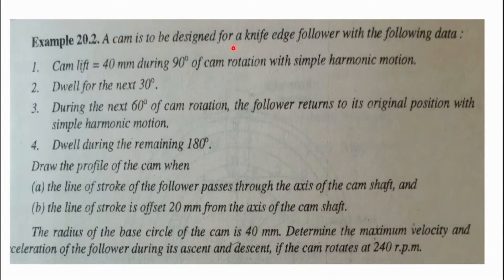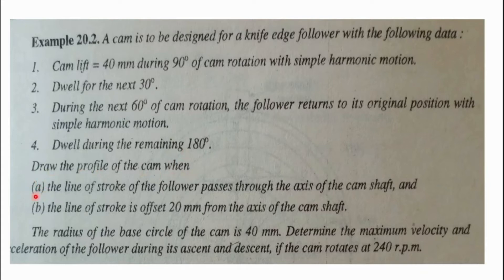A CAM design problem is given for a nine-phase floor with the following data: the CAM lifts 40 mm during 90 degrees of CAM rotation with simple harmonic motion, dwells for the next 30 degrees, and during the next 60 degrees the floor returns to its original position with simple harmonic motion. It dwells during the remaining 180 degrees. Draw the CAM profile for two conditions: A) the line of stroke of the floor passes through the axis of the CAM, and B) the line of stroke is offset 20 mm from the axis of the CAM. The radius of the base circle is 40 mm. Determine the maximum velocity and acceleration of the floor during ascent and descent if the CAM rotates at 240 RPM.